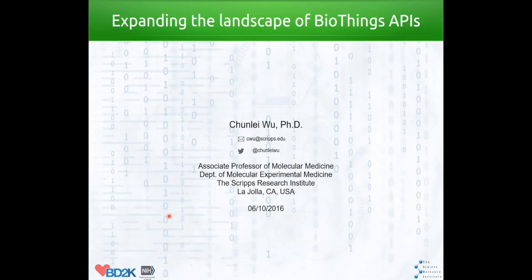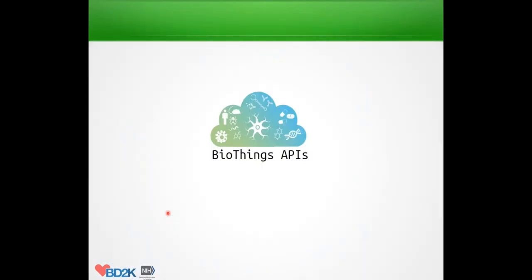All right, thank you, Vincent. I'm going to give some update on the projects on my hand, mainly related to the update on two projects I reported before: mygene.info and myvariant.info. Now we collectively call them the so-called BioThings APIs, and we want to put in some effort to try to expand the coverage of these BioThings APIs. At the end, I will touch on another related project called the SmartAPI project.